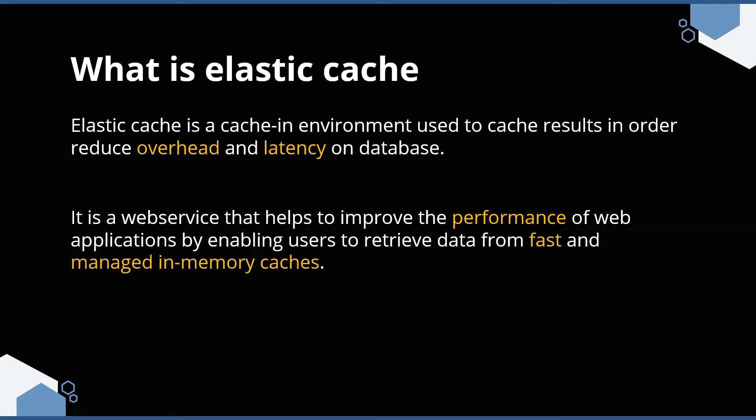First, let's try to understand why we cache. Whenever you request any information from your web application, behind the scenes it goes to your database, fetches the results, and then shows it on your browser. But if there is any information which has been accessed very frequently, then instead of retrieving that from the database, we store that content in the cache memory, which is your RAM, and we fetch it from the RAM and bring it back to your browser.